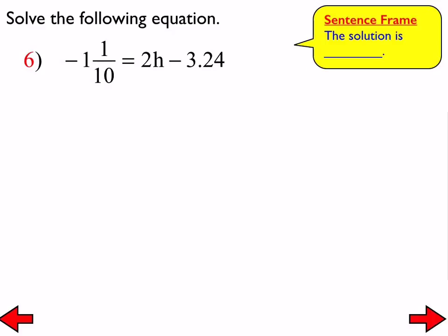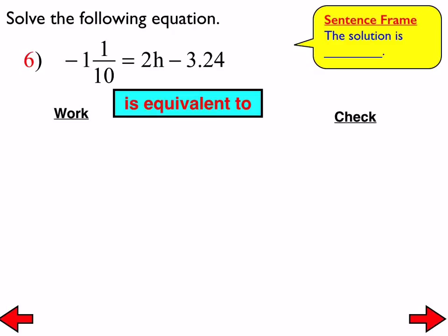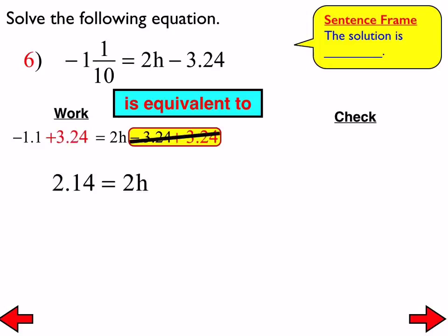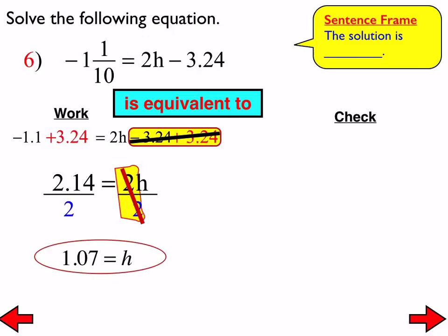Everybody try number 6. We need to do some converting here — I'm going to rewrite it into an equivalent equation, converting negative 101 tenths to a decimal, as that's the easiest thing to do. From there, we add 3.24 to both sides as the inverse operation, then divide both sides by 2, and we should end up with a solution of h equals 1.07. Checking confirms it makes a true statement.